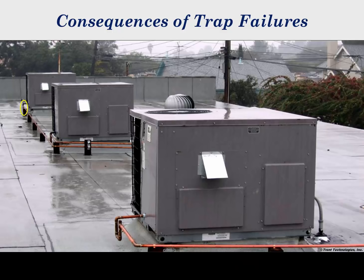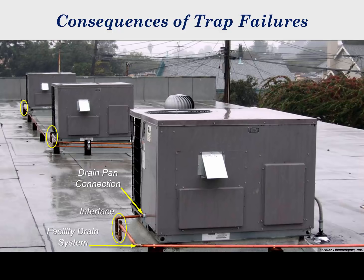Why trap drain systems that allow property damage and health threats are so widely used and unchallenged is explainable. The condensate drain system is a unique component in the total system. It is an interface between the drain pan connection and the facility drain system, for which no entity accepts responsibility for its operation or failures. Hence, there is little interest in improving drain system performance. The building owners and managers are the victims, while others stand to gain in the form of more service calls and higher-than-necessary equipment replacement rates.